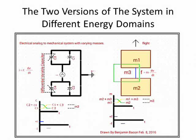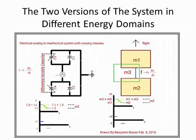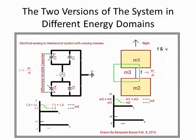I will build upon the analogous relationships between the power conjugate variables in the two domains. In the Mechanical domain, these are Force and Velocity, and in the Electrical domain, these are Current and Voltage.